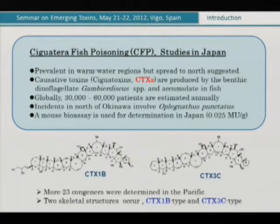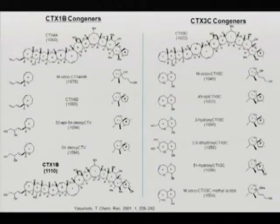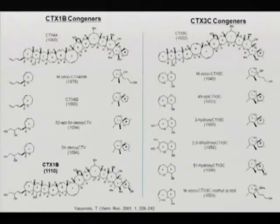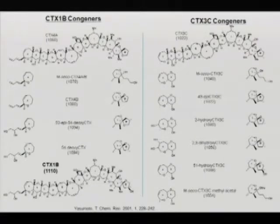This is Shigatoxin 1B group and 3C group. When the toxins get into the fish by a food chain, fish oxidize the terminal part of the toxin. Oxidizing sometimes opens the ring, and both types — 3C and 1B — produce lots of congeners. At the moment I have determined structure up to 23 structures.